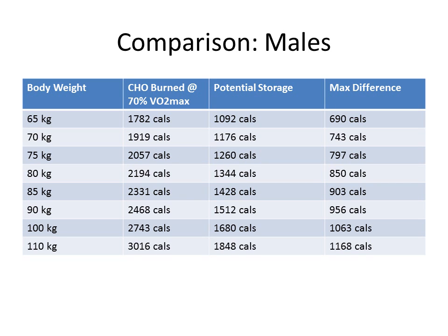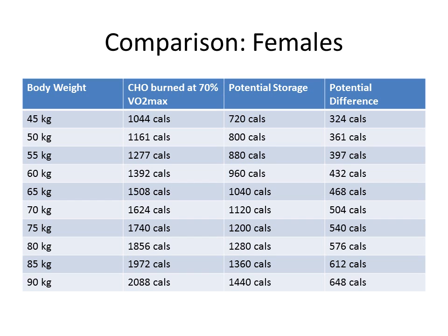For a quick comparison using 70% VO2 max as an average marathon effort: a 65-kilogram male is going to burn 1,782 kcal from carbohydrates, and can store a max of about 1,100 calories. That leaves almost a 700-calorie difference between what they have and what they need. That deficit is vital information because now we know what we need to do to replace it. The same applies to females, where the difference is a bit less, but still there.